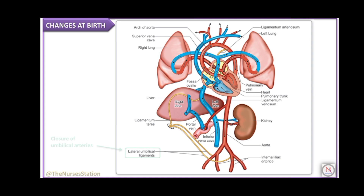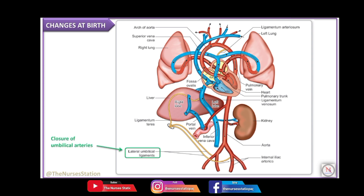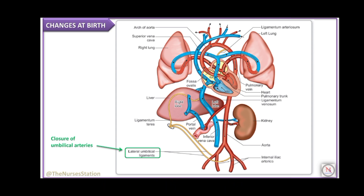Changes in fetal circulation after birth include: first, closure of the umbilical arteries, which become the lateral umbilical ligaments — functional closure is almost instantaneous but actual closure takes two to three months. Next, closure of the umbilical vein, which becomes the ligamentum teres. Obliteration of the umbilical vein occurs slightly later than the arteries, allowing a little extra blood volume to be received by the baby from the placenta.